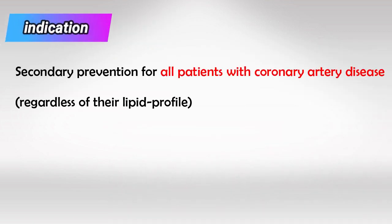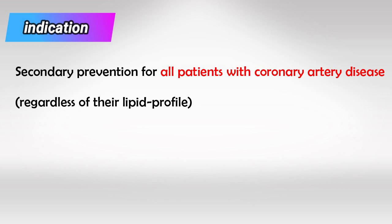It's a lipid-lowering agent, so we use it to decrease the lipid profile when it's very high. But most importantly, we use it as secondary prevention for all patients with coronary artery disease, regardless of their lipid profile. Remember, secondary prevention means we use it after symptoms occur, whereas primary prevention is use before symptoms occur.